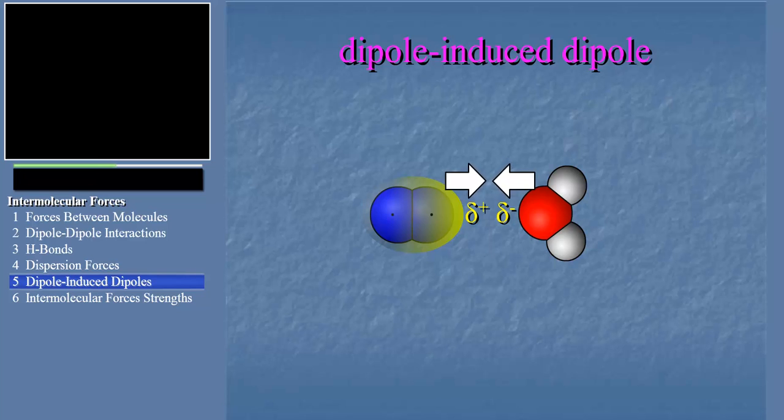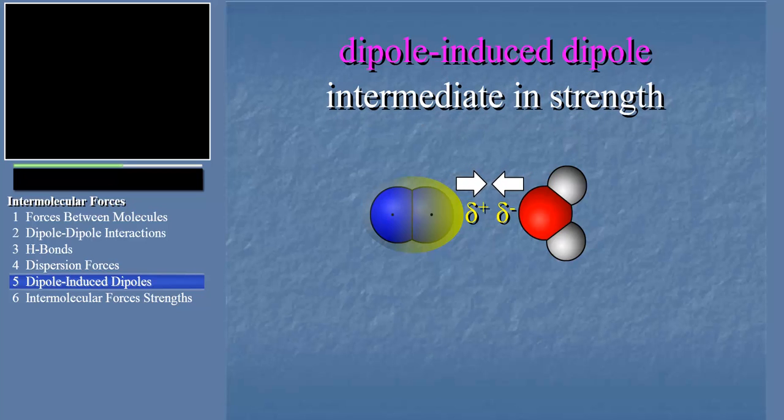As you might imagine, this attraction is intermediate in strength between a dipole-dipole interaction and dispersion forces. It's responsible for the low level of solubility of non-polar gases like nitrogen or oxygen in water, for example.